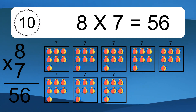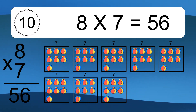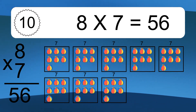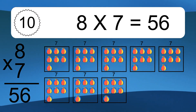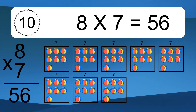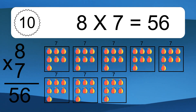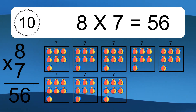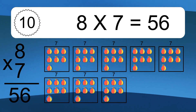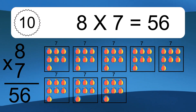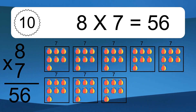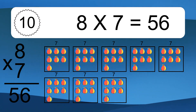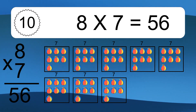We have 8 boxes, and each box has 7 colorful balls inside. If you count all the boxes together, you will have 8 times 7 balls. This equals 56 balls.